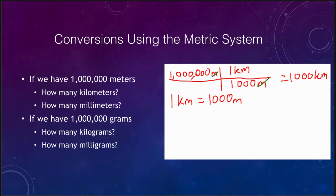Now we can also convert this 1 million meters using the same method into millimeters. So we have 1 million meters. Now we have to think, how many millimeters are there in one meter? Well, one meter equals 1000 millimeters.